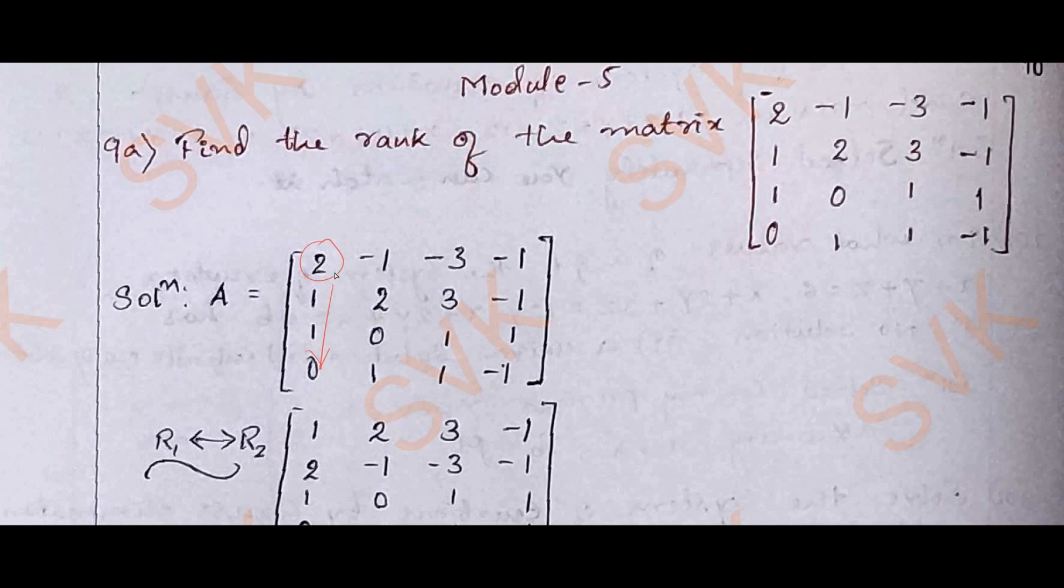To make sure that the leading entry is 1 here, I am going to interchange the first row and second row. That is what I am going to do. R1 changes with R2.